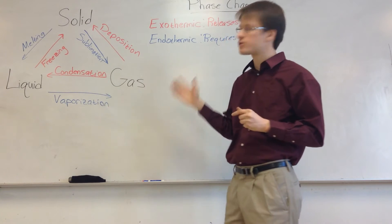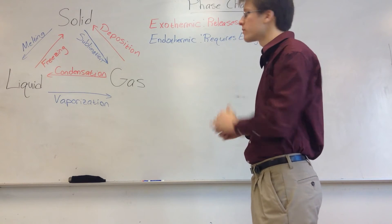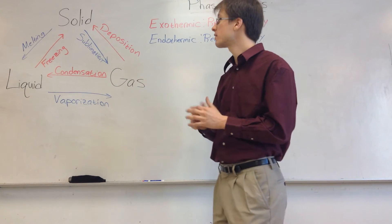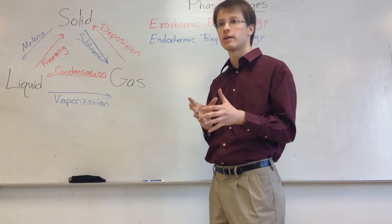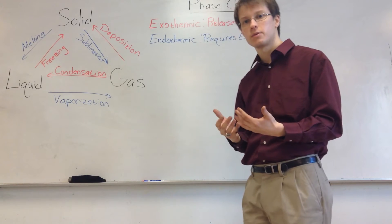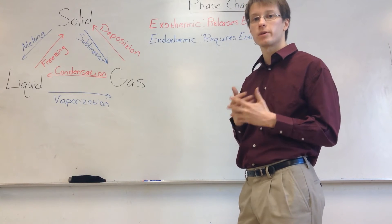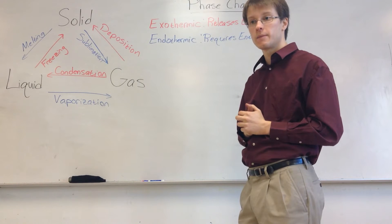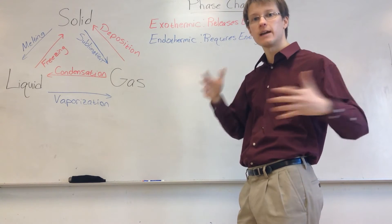I've labeled what each phase transition is called, and I've also color-coded it so that things that are red are exothermic. Exothermic means that they release energy. So when something freezes — going from a liquid to a solid — it's lowering the amount of energy it has, cooling down, and releasing energy. Endothermic means that it requires energy in order to happen. So something melting requires that energy is put into that system. If I put an ice cube in a really cold place, nothing's going to happen because there's no heat for it to draw from and melt.